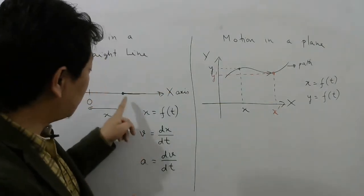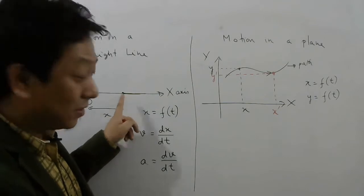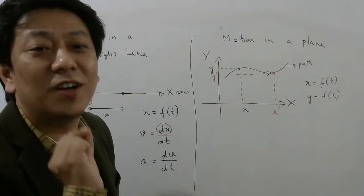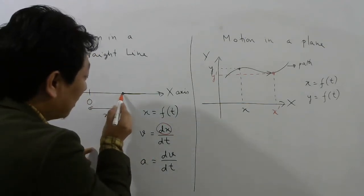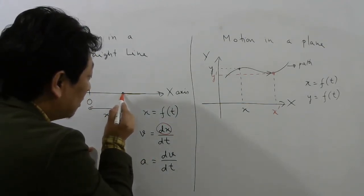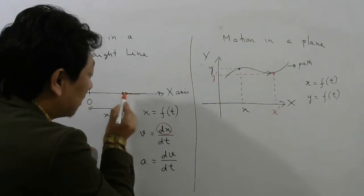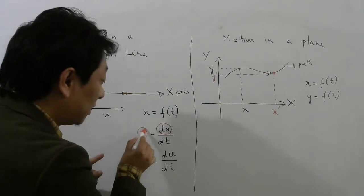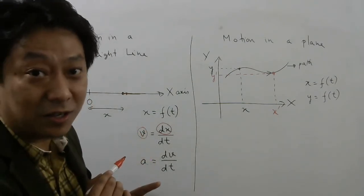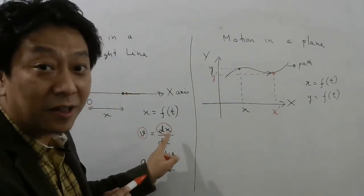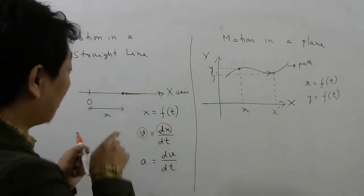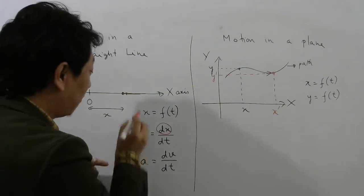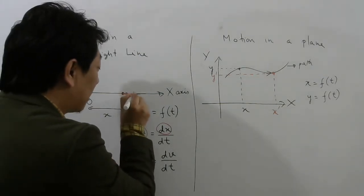Here, x represents the position, and dx represents a very small displacement. So when the particle goes from here to here, this will be your displacement — from initial position to final position. Your instantaneous velocity will always be in the direction of this dx. And if the particle is moving this side, dx will be this side, so the velocity vector will also be this side.